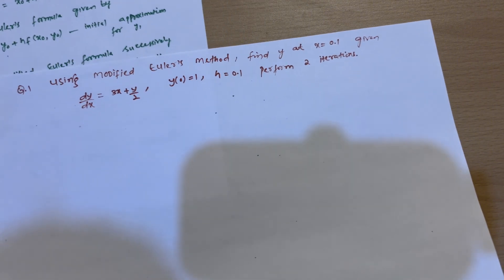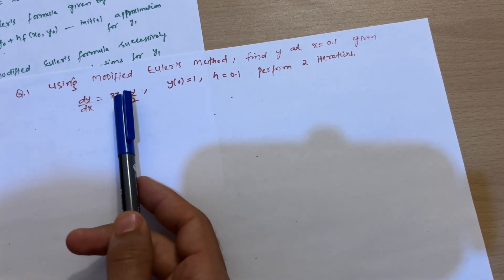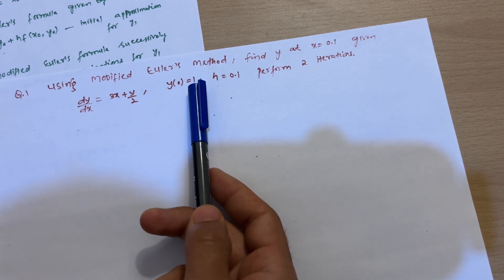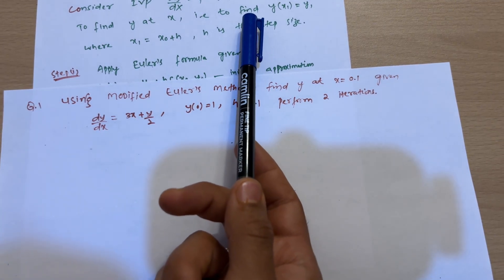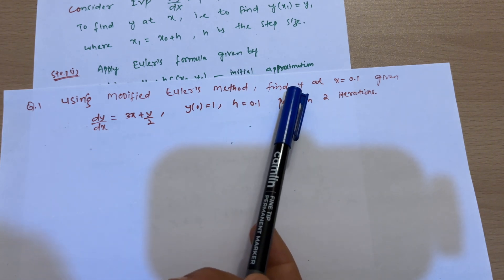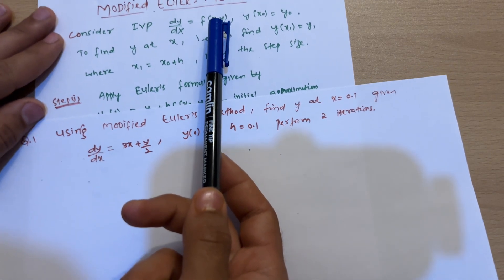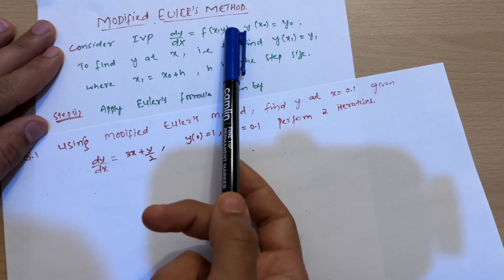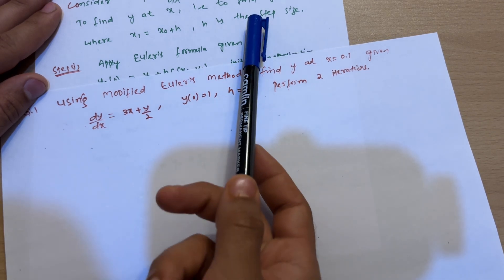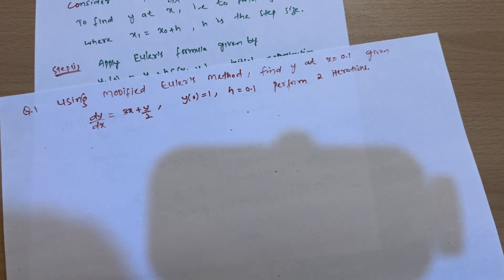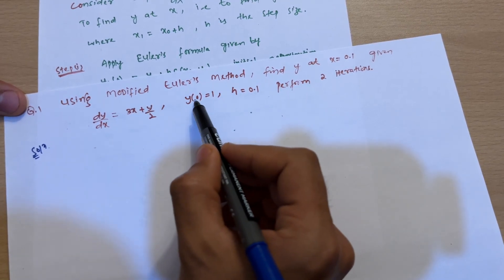Now let's solve a question. Using the Modified Euler's Method, find y at x = 0.1, given dy/dx = 3x + y/2, with initial condition y(0) = 1. The step size h = 0.1 is also given. We have to find y at x = 0.1.